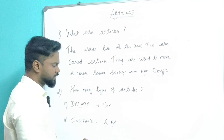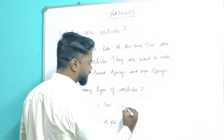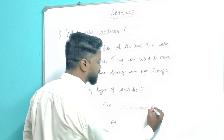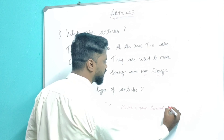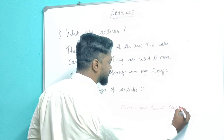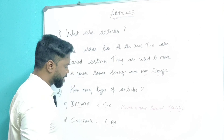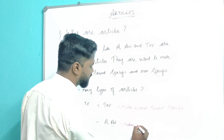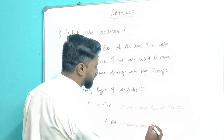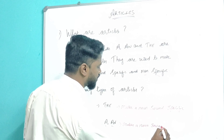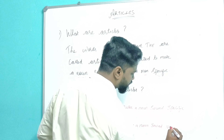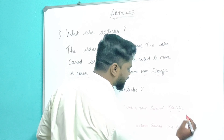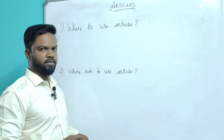Number one: definite articles — 'the'. The definite article makes a noun sound specific. Number two: indefinite articles — 'a' and 'an'. The indefinite articles make a noun sound non-specific.